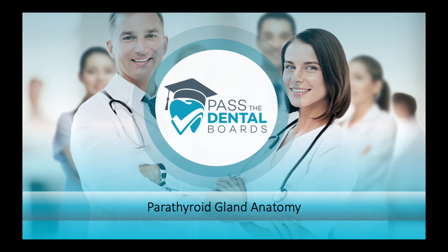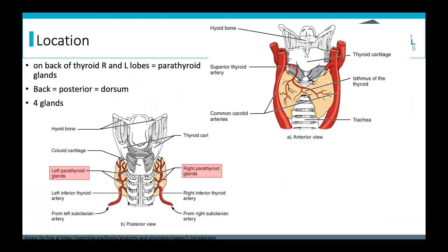Let's look over the parathyroid. The location — we earlier talked about how it's on the back of the thyroid gland. It's not on the back of the isthmus; it's on the back of the lobes of the thyroid. On the exam, you'll see the words posterior and dorsum used. There are four main glands — two on the left and two on the right.